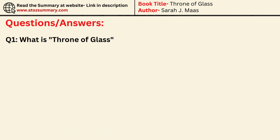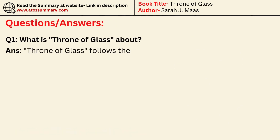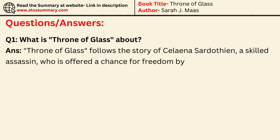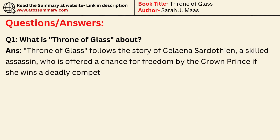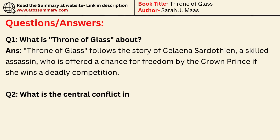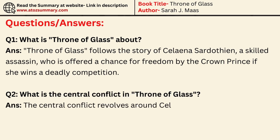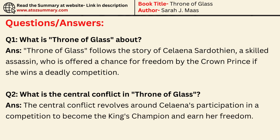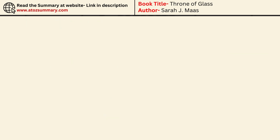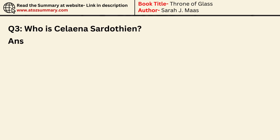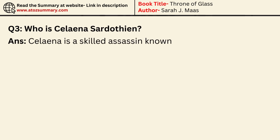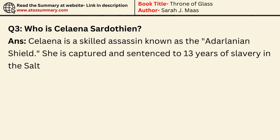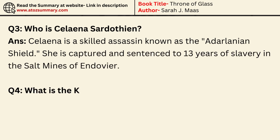What is Throne of Glass about? Throne of Glass follows the story of Selina Sardothian, a skilled assassin, who is offered a chance for freedom by the crown prince if she wins a deadly competition. What is the central conflict in Throne of Glass? The central conflict revolves around Selina's participation in a competition to become the king's champion and earn her freedom. Who is Selina Sardothian? Selina is a skilled assassin known as the Adarlinian Shield, captured and sentenced to 13 years of slavery in the salt mines of Endivir.